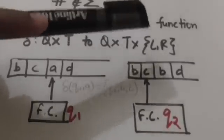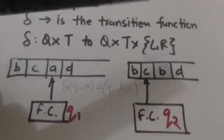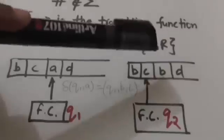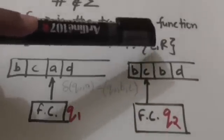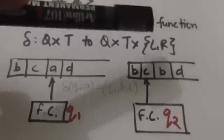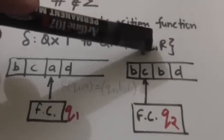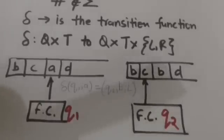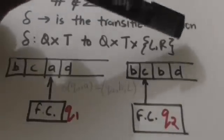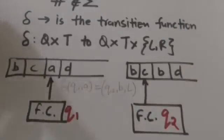The direction of movement of the tape head is represented by symbols L and R. L represents the left direction, R represents the right direction.